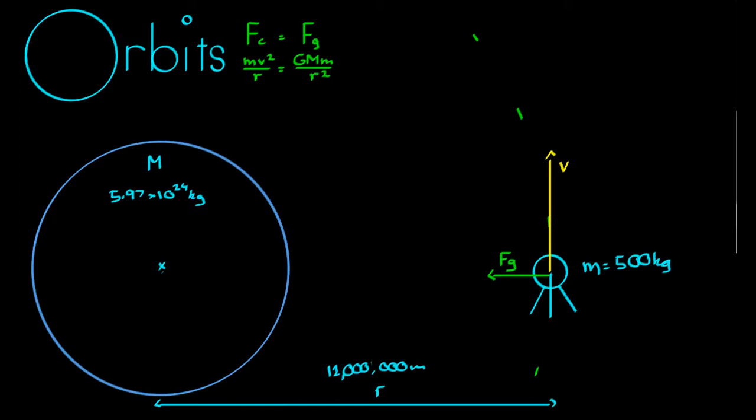We know that this satellite here, without knowing the velocity, if we know the mass of the satellite, the mass of the Earth and the radius, we can figure out this Fg force. Let's figure that out. Fg is equal to big G.